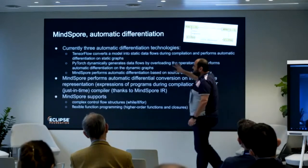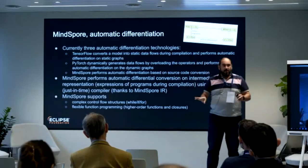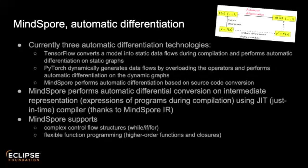Another interesting feature is automatic differentiation. TensorFlow captures static data flows during compilation and performs automatic differentiation on a static graph. PyTorch takes a different approach — capturing data flows by overloading operators and performing automatic differentiation on a dynamic graph. MindSpore takes yet another approach: performing automatic differentiation based on source code conversion, which is why the intermediate representation is important — it enables unique graph execution optimizations.